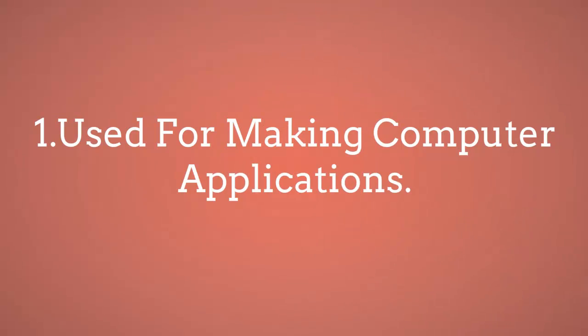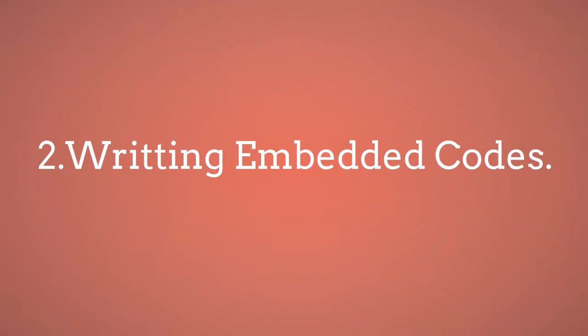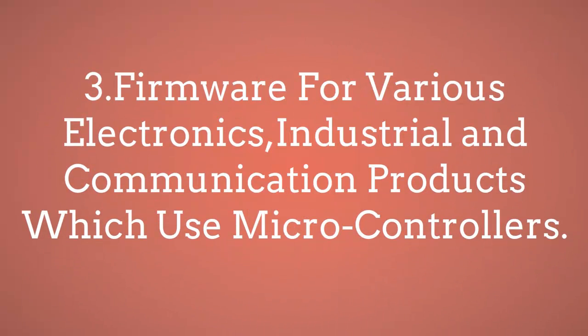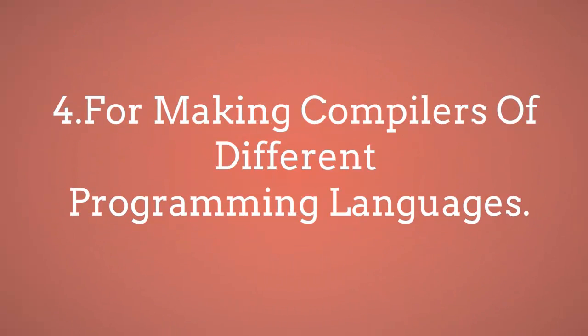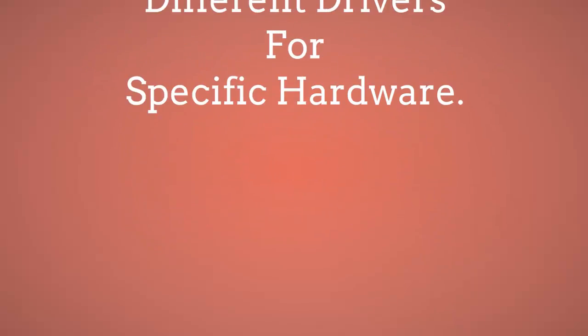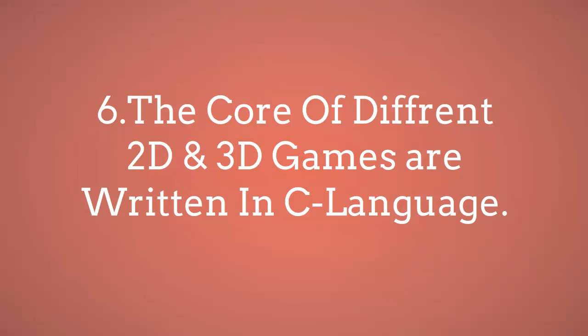C language is used for making different computer applications. C is also used for writing embedded code, which is used in the embedded industry — a different branch of technology. Most robotic and automation industries work with Embedded C, which is an identical brother of C. C is used for making compilers of different programming languages — in fact, the interpreter of Python is written in C. C is also used for writing drivers for specific hardware, and the core of different games, whether 2D or 3D, are written in C.